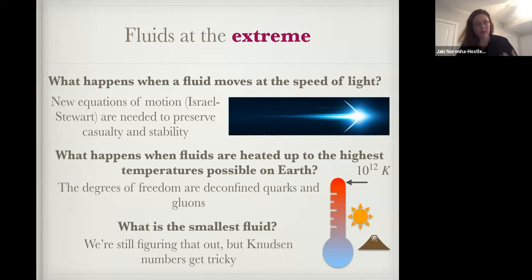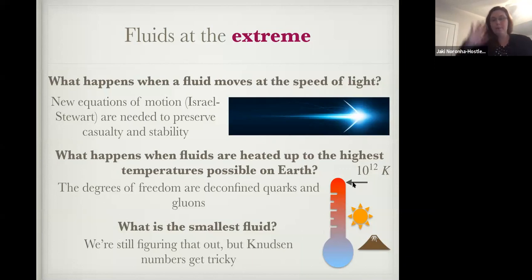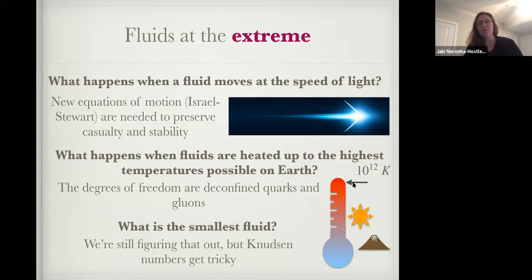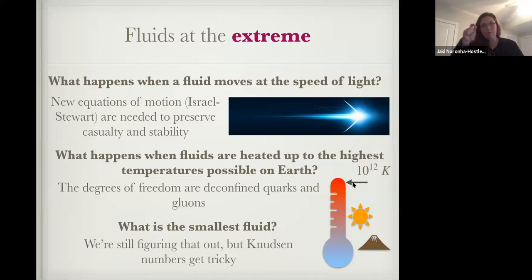I also like to think about what happens when a fluid is at the highest temperatures possible on Earth — 10 to the 12th Kelvin. You can see on this graph it's much, much hotter than a volcano or our sun. When we reach these really high temperatures, we have to think about new degrees of freedom: quarks and gluons, instead of H₂O molecules, are what make up the fluid. And then the next question is: what is the smallest possible fluid? At what point can we keep taking particles away and still apply hydrodynamics?